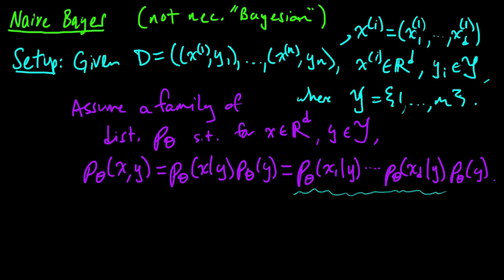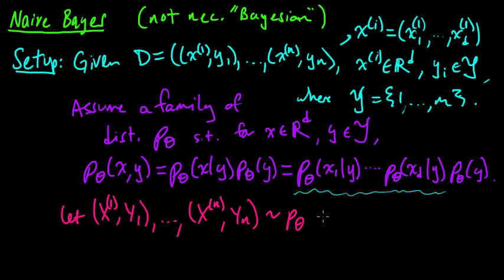So this is the key assumption here. And so if we have some random variables, so we assume this family of distributions, and now we're going to model our data. So we assume that these are distributed according to this joint distribution, p_theta, and they're iid, for some theta. So we assume that there's some theta for which these random variables are iid, are randomly distributed. And then we're going to assume that our data comes from such random variables.